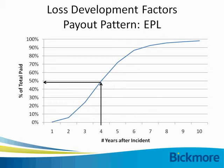I see on the chat line somebody asked for an example of an employment practices liability claim. Employment practices liability is generally where an employee sues the employer for something related to their employment itself — discrimination based on age, gender, or race; discrimination related to termination or not being promoted. Those are the main examples of employment practices liability claims.